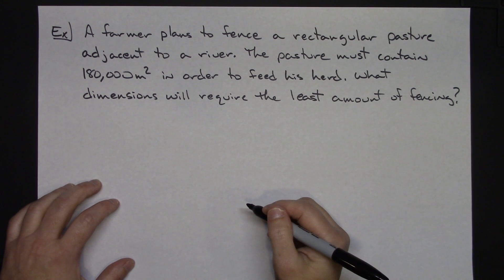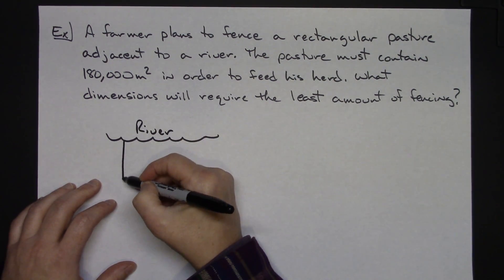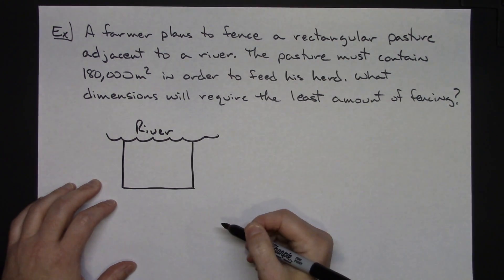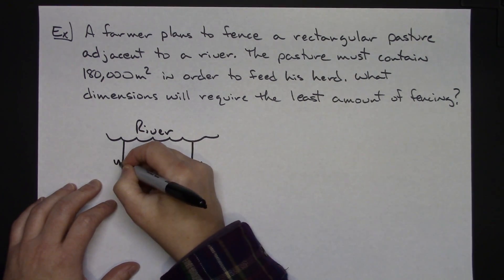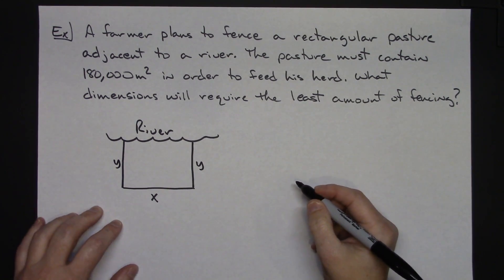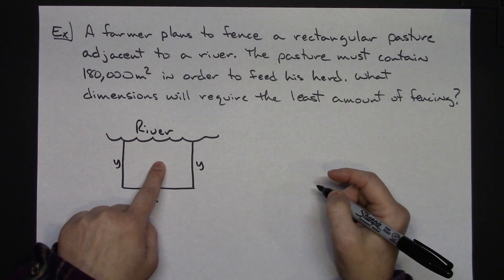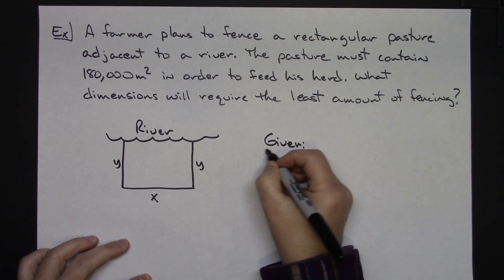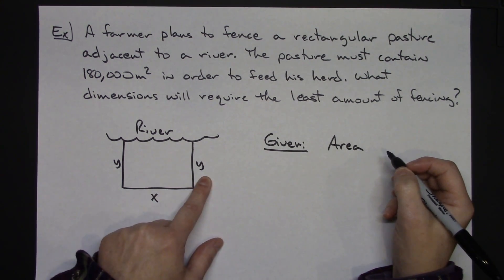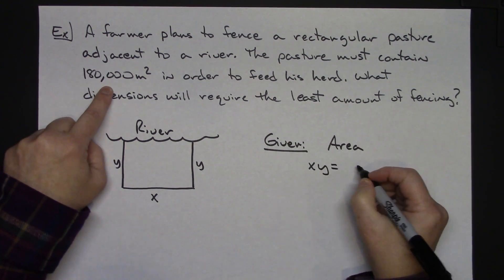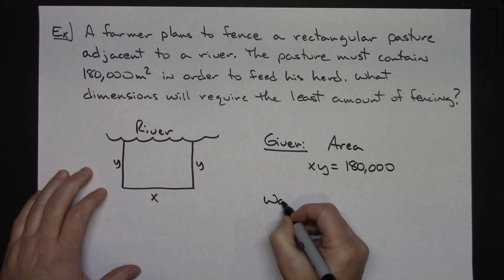I recommend drawing a picture to represent what's going on. You've got a river, and that's where the fence is going to be put up against it. Draw the fence in a rectangular shape, since it says rectangular pasture. Label the sides: one side X, and the two sides Y. The given they gave us is 180,000 meters squared — meters squared tells you it's area. So I can write an equation: length times width, X times Y, equals 180,000.